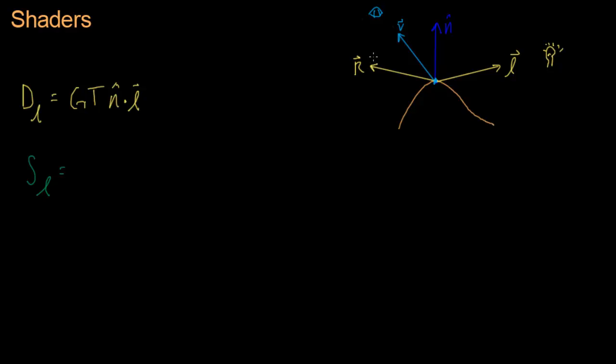So V is the vector from the position that we're rendering to the player's eyeball. And the specular term is going to be the dot product of these two. So let me write that over here. It's going to be R dot V. In other words, how much light that gets reflected gets reflected towards the eye. That's sort of what the dot product tells us.